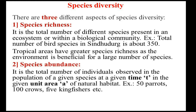There are three aspects of species diversity. First, species richness: it is the total number of different species present in an ecosystem or within a biological community. For example, the total number of bird species in Sindhudurg is about 350. Tropical areas have greater species richness as the environment is beneficial for a large number of species.